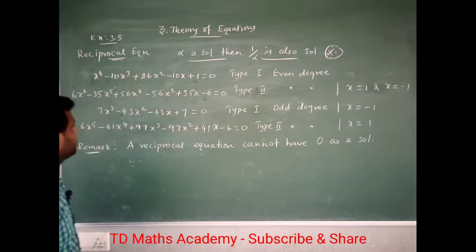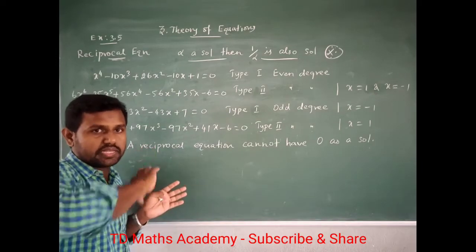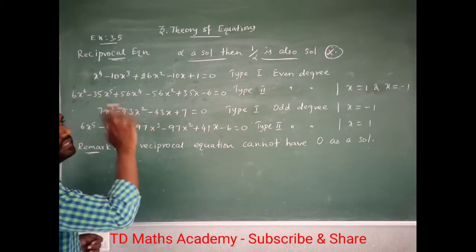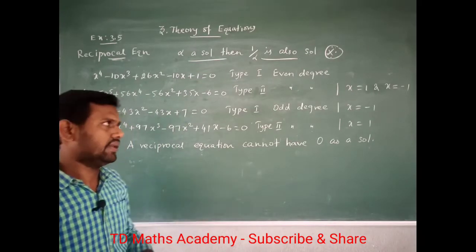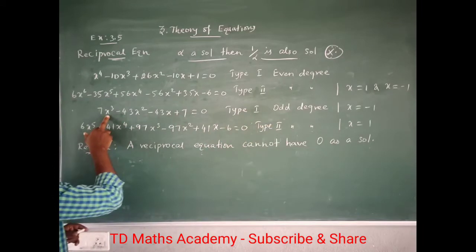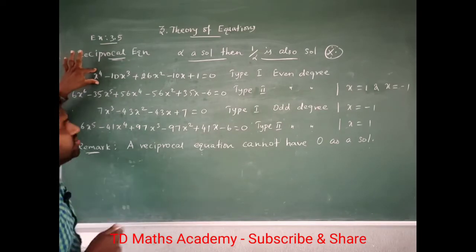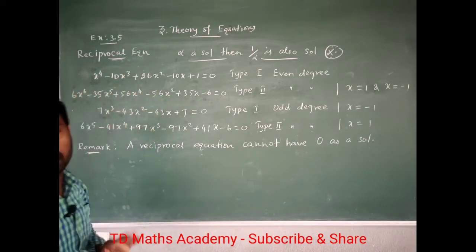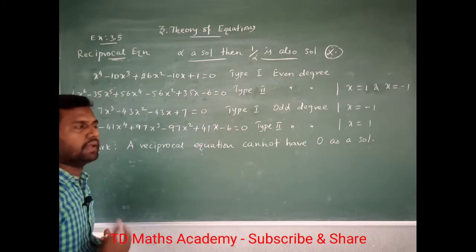If the signs are all the same — plus one and plus one — that is Type 1. Type 1 has even degree. The degree is the highest power, so if the highest power is 4 that is even degree, Type 1. If the degree is odd, that is also Type 1 odd degree. So Type 1 has both even degree and odd degree.